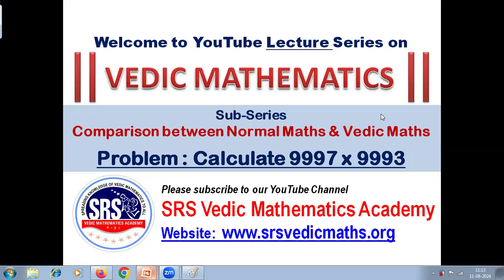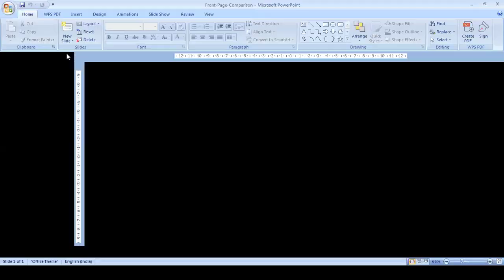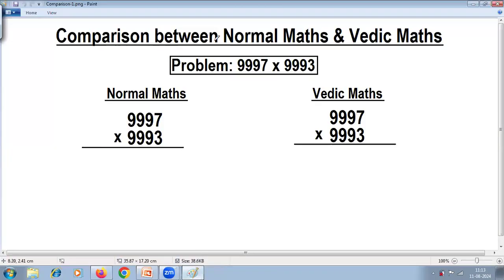Welcome to the YouTube lecture series on Vedic Mathematics, sub-series: comparison between normal maths and Vedic maths. Today's problem is to calculate 9997 multiplied by 9993. We'll take this one problem and compare the school method of multiplication with the Vedic method.